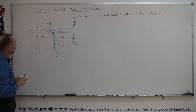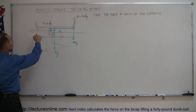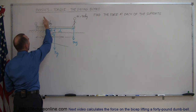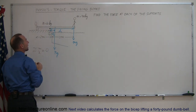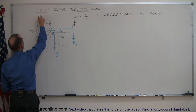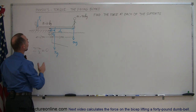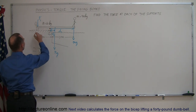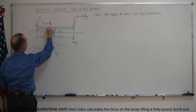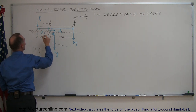The third force: if the diver's weight and board weight were the only forces, the board would simply tip this way — the end would go up. So the support here is keeping the board from tipping up, meaning there's some force pushing down on the board at that point. Let's call that force F1 at point number one. The distance from the pivot point to that force — the perpendicular distance — let's call that D3.